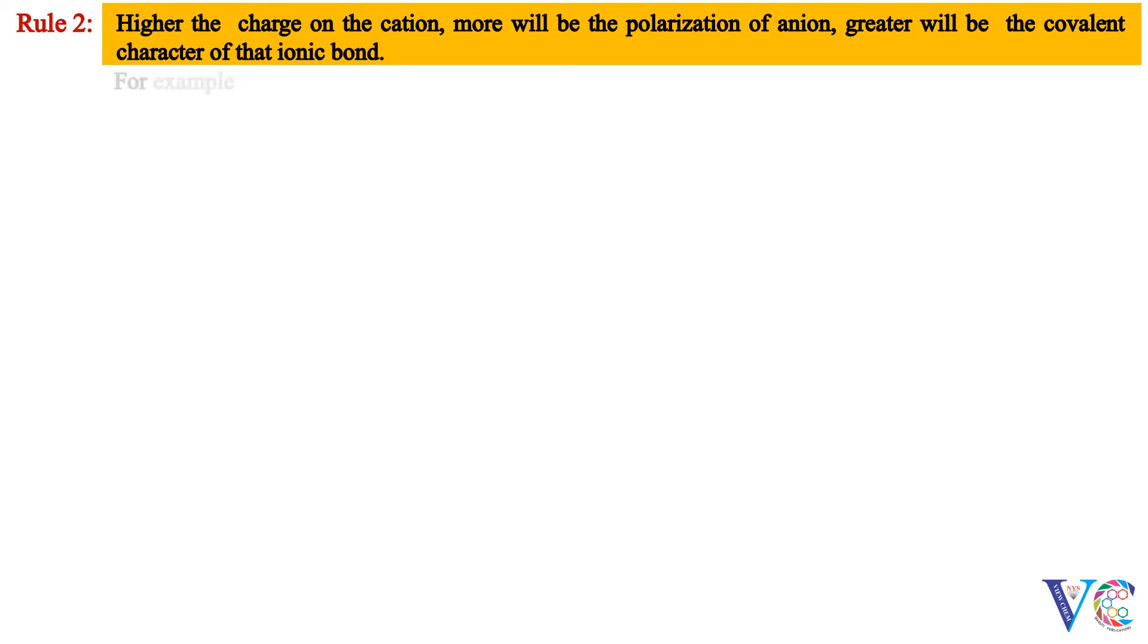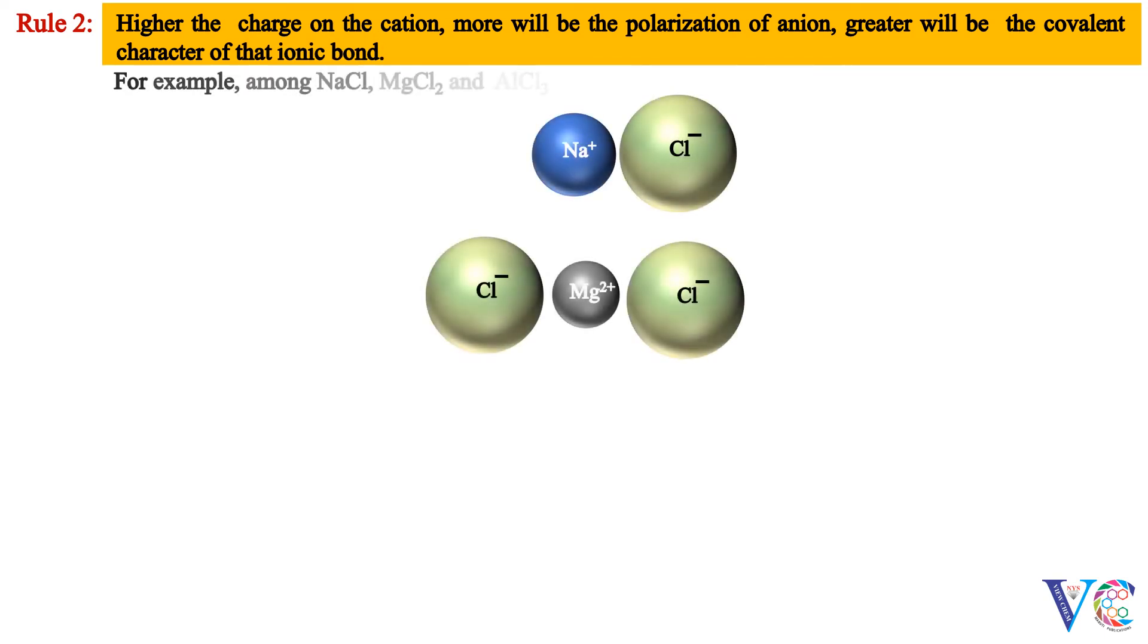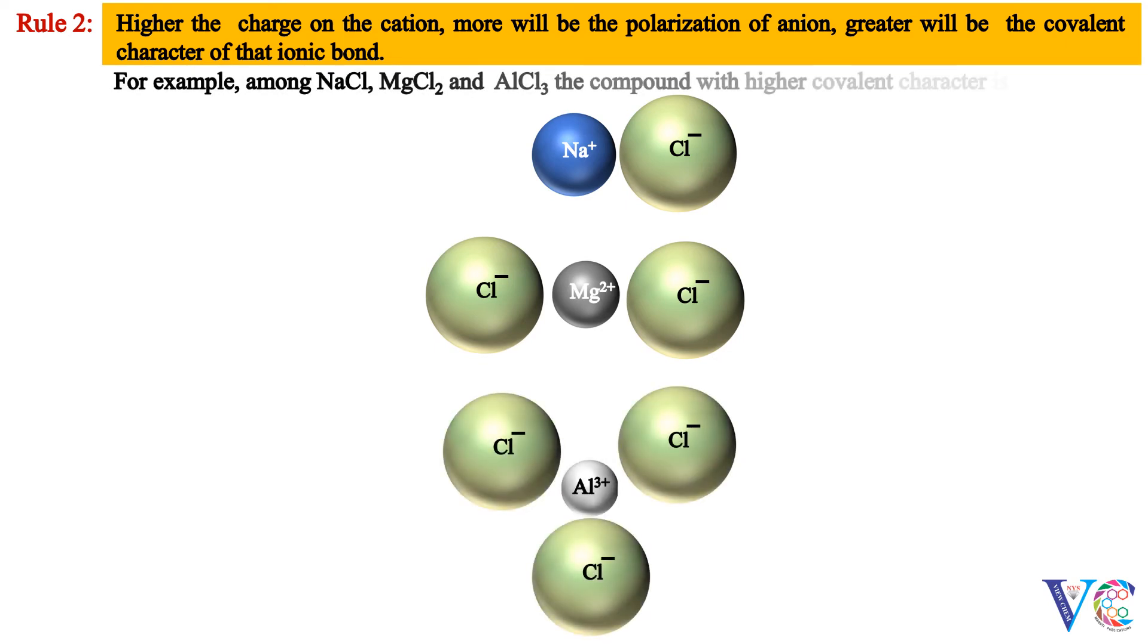For example, among NaCl, MgCl2 and AlCl3, the compound with higher covalent character is aluminum trichloride.